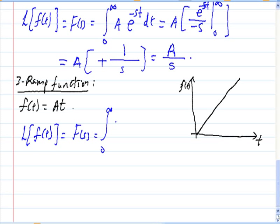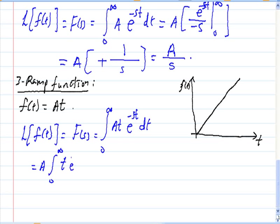The Laplace transform is the integral from 0 to infinity of a·t·e^(−st) dt. We take the constant a outside, giving a times the integral from 0 to infinity of t·e^(−st) dt. Since there are two functions multiplied together, we use integration by parts.